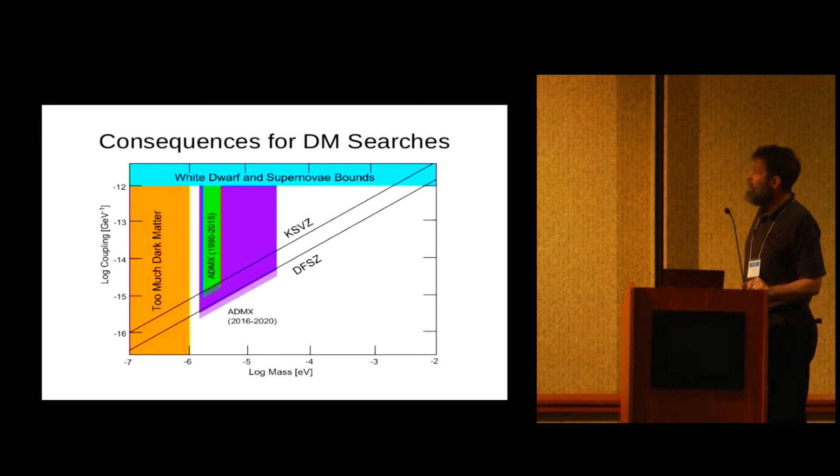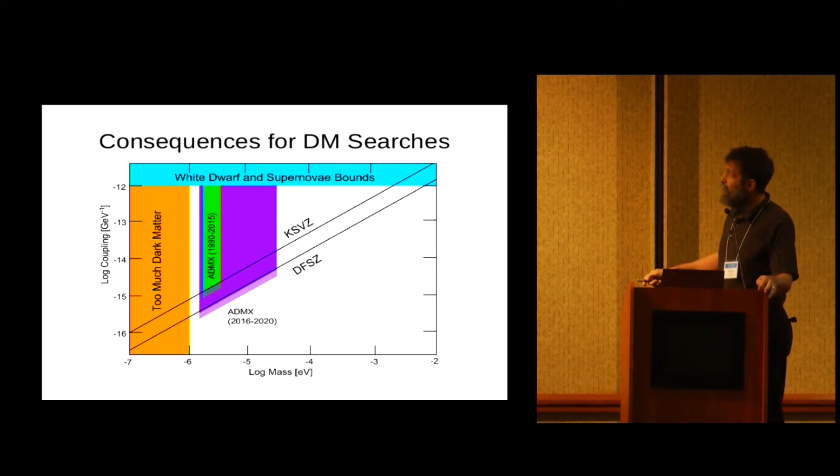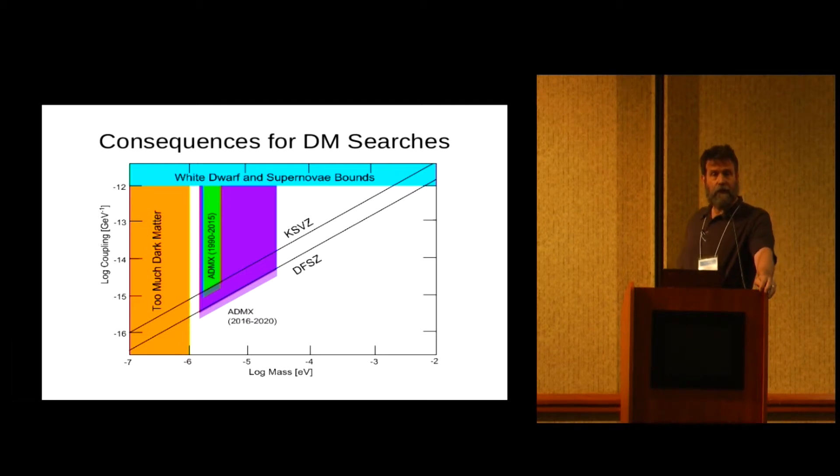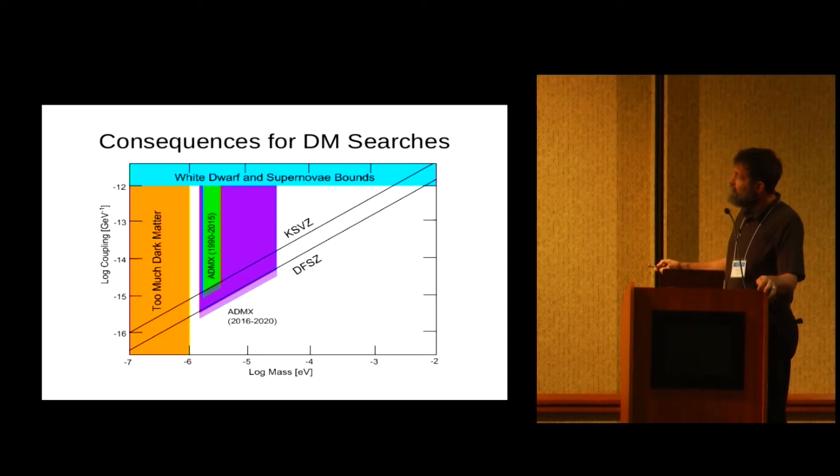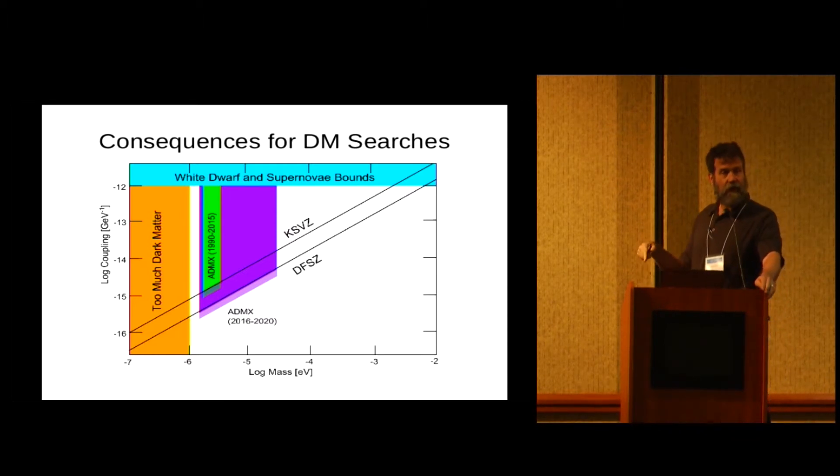And then we can apply that to the constraint diagrams from the experiment. So again, this is mass of the potential dark matter axion, this is the coupling constant of the axion to standard model physics. A couple of minimal models are these diagonal lines here. And the shaded region here is the constraints from the ADMX experiment running at the University of Washington.